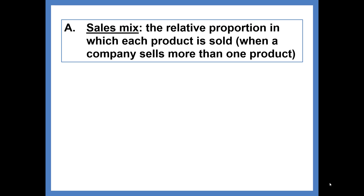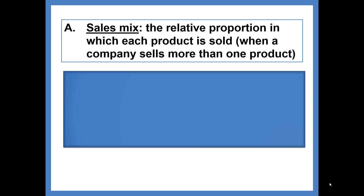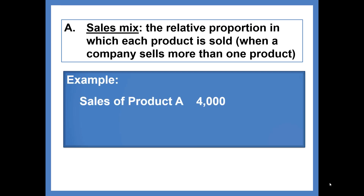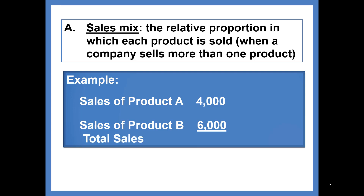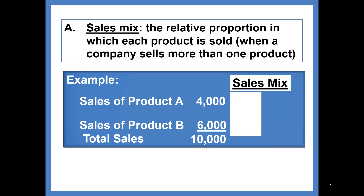First, recall what sales mix is. It is simply the relative proportion in which each product is sold. So if a company expects to sell 10,000 units and they sell product A and product B, the sales mix — if for product A we expect 4,000 units and for product B we expect 6,000 units, that's a total of 10,000 units — we could say our sales mix is 40% product A, 60% product B.